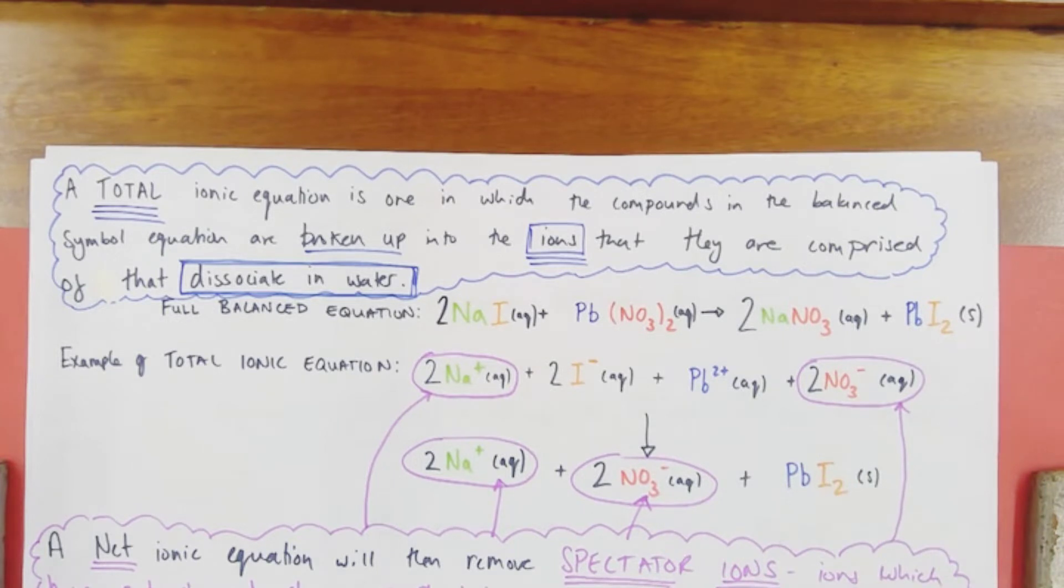Precipitates, don't forget, are formed when two soluble reactants in solution react together to form an insoluble product, which in this case would be our lead iodide.